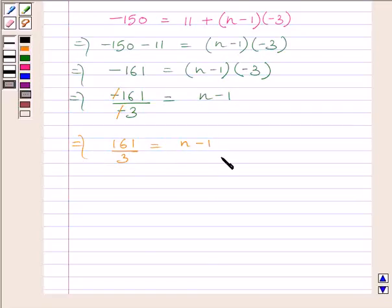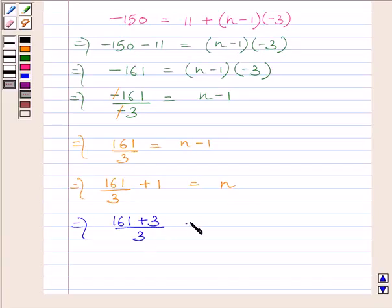Now adding 1 on both the sides we get 161 upon 3 plus 1 is equal to n. Now we will add these two terms by taking their LCM. We get (161 plus 3) upon 3 is equal to n. This is further equal to 164 upon 3 is equal to n.